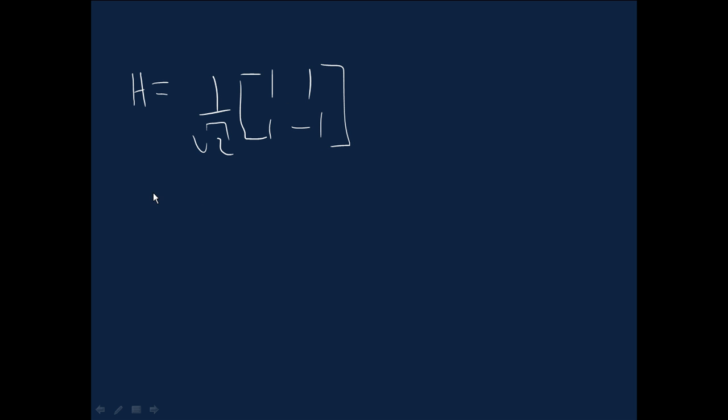Why don't we instead have, let's call it H tilde, why not just have this, no minus sign? So we'd have H tilde acting on zero, gives you the equal superposition of (|0⟩ + |1⟩)/√2, and similarly for the one state.